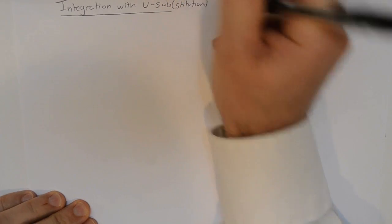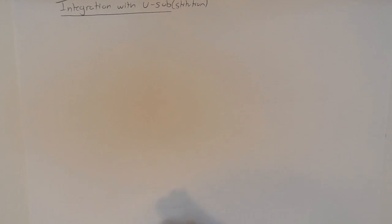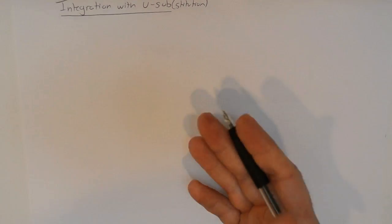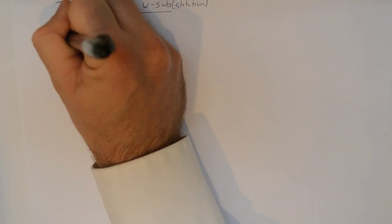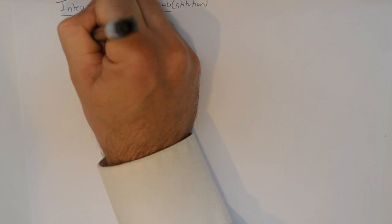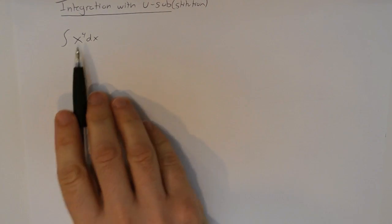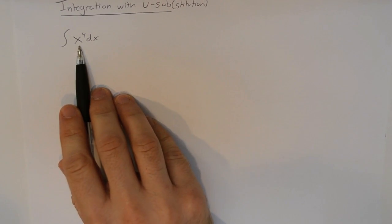What u-substitution is used for is if we come across an integral that we can't do in its form. Let me first give you an example of when we don't need u-substitution. Let's say I wanted to integrate x to the fourth dx. This is an integral that I really don't need to worry about u-sub because it's what we call a standard form.